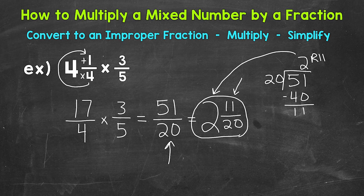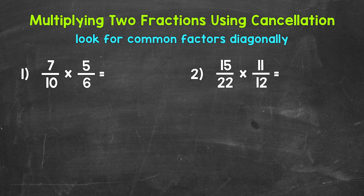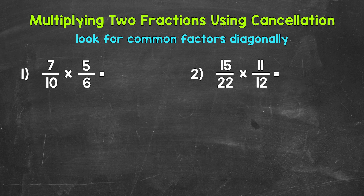Let's move on to how to use cancellation when multiplying fractions. Cancellation, also called cross cancellation, is a way to simplify a problem before we multiply. We multiply straight across — numerators times numerators and denominators times denominators. We use cancellation before we multiply straight across. This strategy gives us smaller numbers to work with. Let's jump into our examples, starting with number 1: 7 tenths times 5 sixths. We look for common factors diagonally.